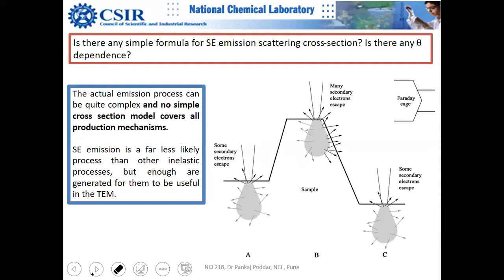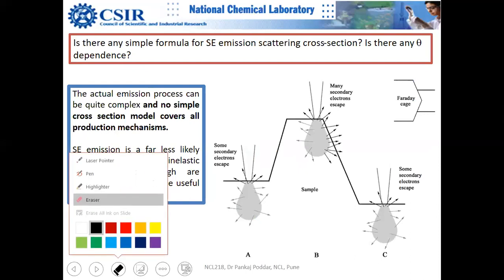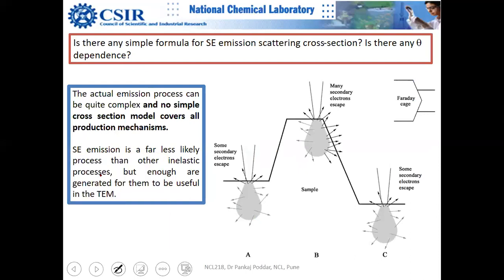Looking at the topography of a typical sample: the detector is on one side and electrons must reach it to be detected. When the electron beam bombards a specific area, secondary electrons are emitted and must travel toward the detector.